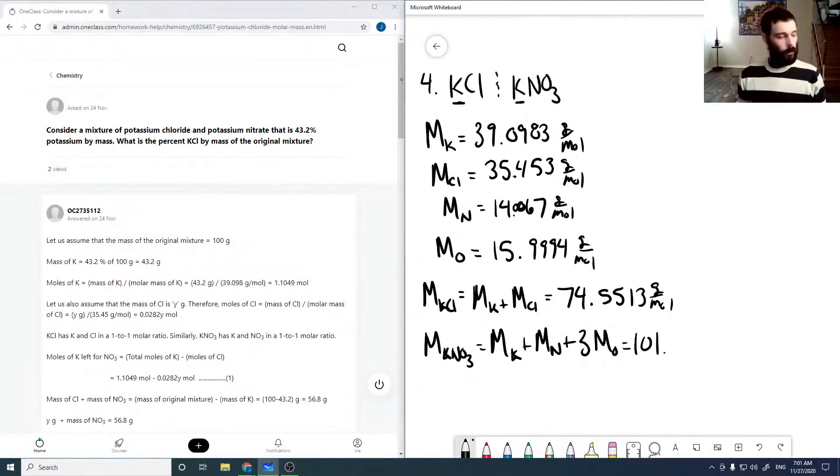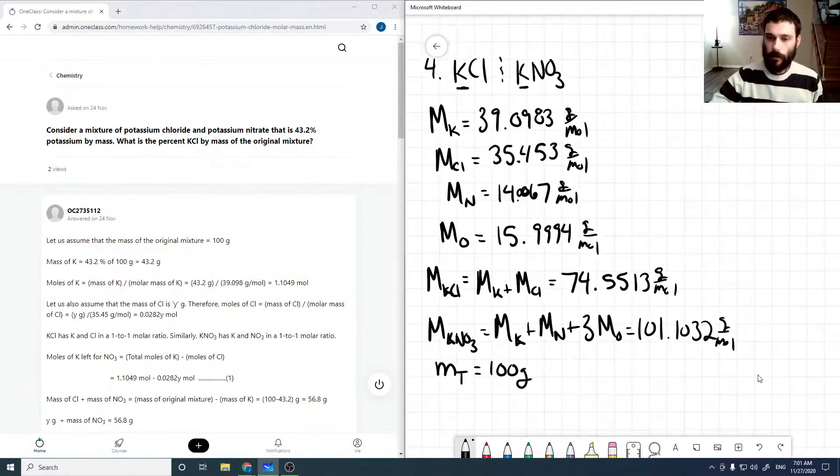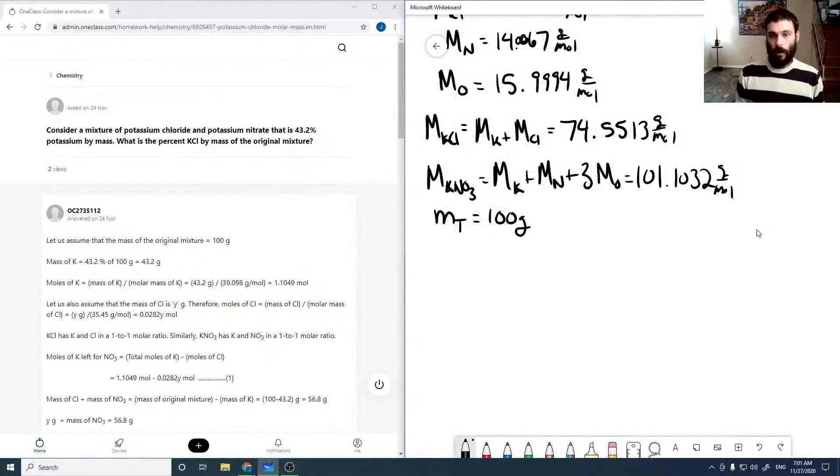Okay, so the easiest way to start this off is just to assume we have 100 grams of sample. We can use any amount because we're dealing with fractions in the end anyway, and it'll always be able to extend to any amount of mass. But 100 grams will make everything kind of nice.